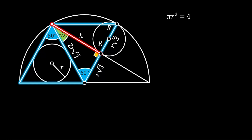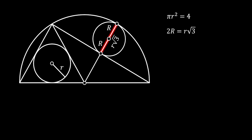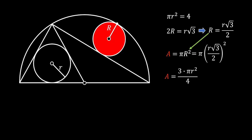Let's simplify our image and keep only the information we need. Notice the diameter of our wanted inscribed circle. This diameter equals 2R and is also equal to r√3. So we can say that the radius of our wanted circle is R = r√3 over 2. We are looking for the area of this inscribed circle, so the area equals π R². Substituting the value of R, we get π times (r√3/2)², which simplifies to 3πr² over 4.